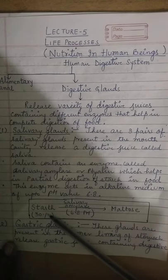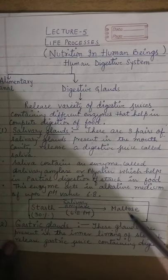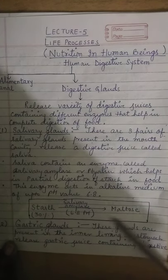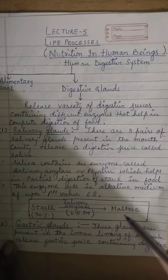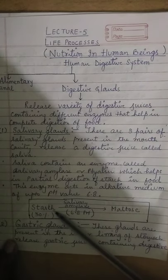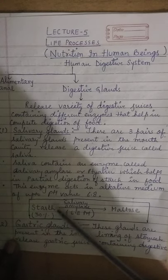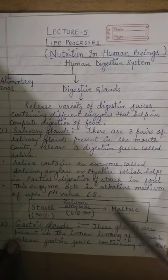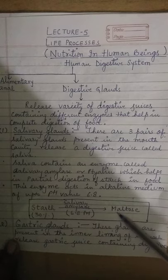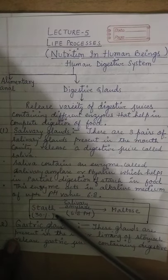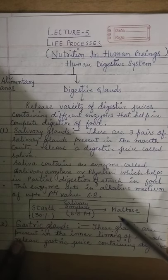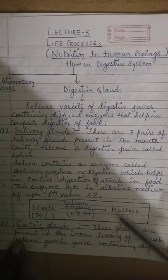About 30% of starch gets partially digested into its smaller form with the help of salivary amylase. Starch is a polysaccharide, which is a complex form of carbohydrates. Maltose is also a carbohydrate, but starch is the complex form while maltose is a smaller, simpler carbohydrate.